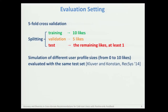We split the users into five folds randomly. Then for each test fold, we split the likes for each test user into a training set composed of 10 likes, a validation set of five, and with the remaining likes we constructed the test set. This strategy allows us to simulate different user profile sizes from 0 to 10 likes, using the same test set for each test user in the different configurations, in order to avoid possible bias in the evaluation.